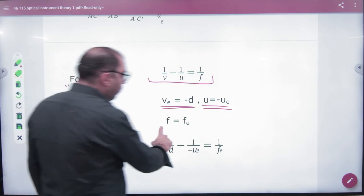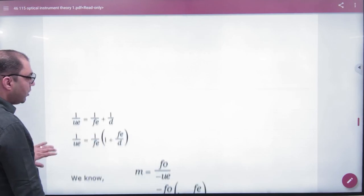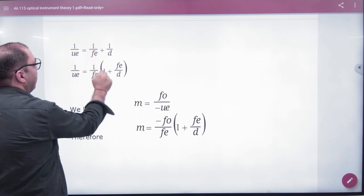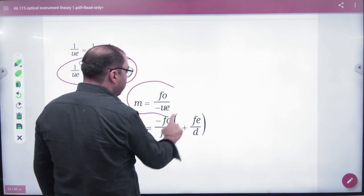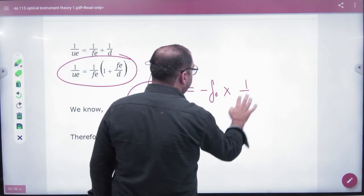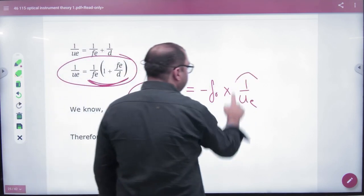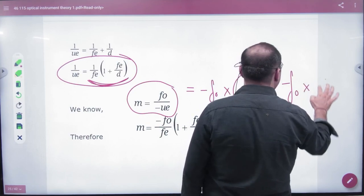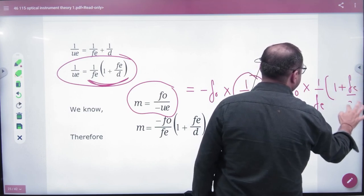So here, the focal length and convex length is positive. So if I put values here, 1 by Ue one side, 1 by Fe, then it will be 1. And it will be 1 by Ue. Because I have a magnification telescope equal, I will do it. Minus F0 into 1 by Ue. The value of 1 by Ue, I will put it here. So I have an answer. Minus F0 into 1 by Fe into 1 plus Fe by d.